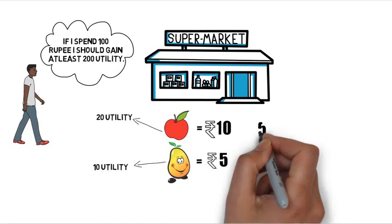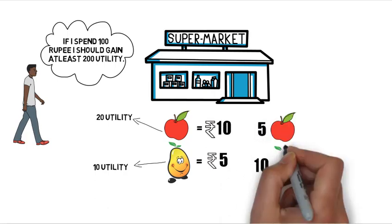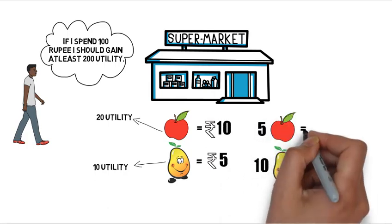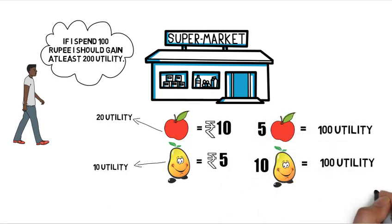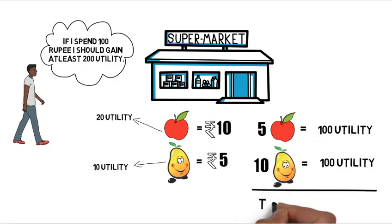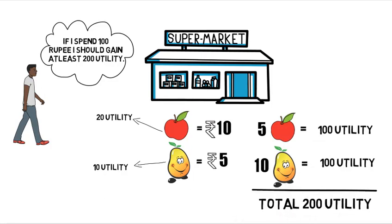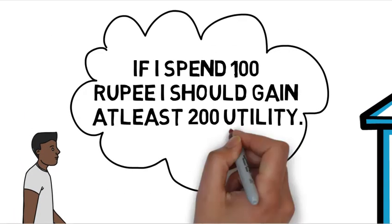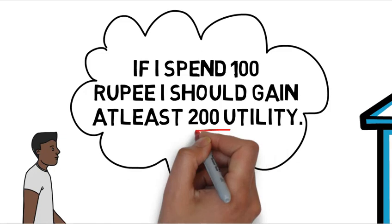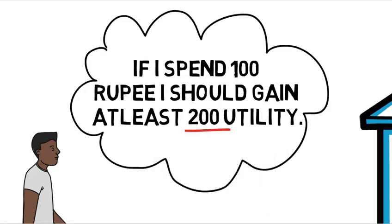So if you buy 5 apples and 10 mangoes, you will end up having 200 units of utility. You have spent Rs.100 and gained 200 units of utility. That's great.